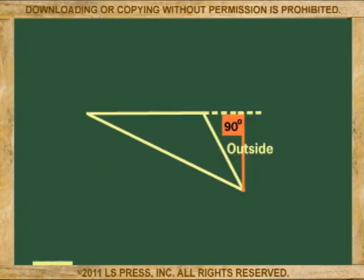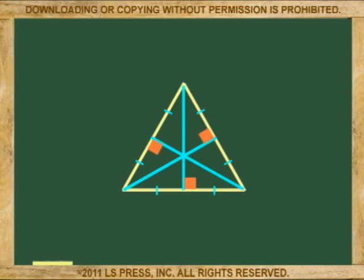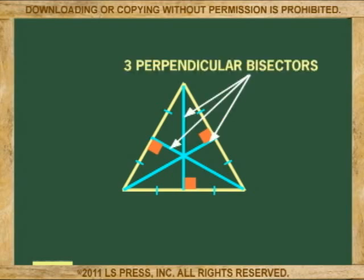This depends on the shape and measurements of the triangle. Also notice that in an equilateral triangle, both the median and altitude are the same from every vertex, and because of that, it has the specific name of perpendicular bisector.